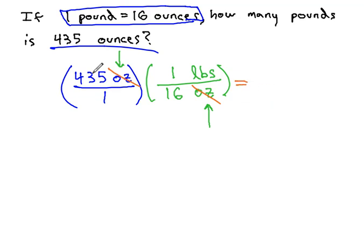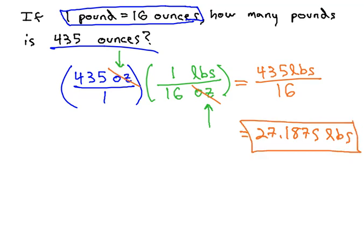We can multiply straight across. 435 times 1 pound is 435 pounds over 1 times 16, or 16. To get our final answer, we'll take the 435 and divide out the 16, which is going to give us 27.1875 pounds, is the same as 435 ounces.